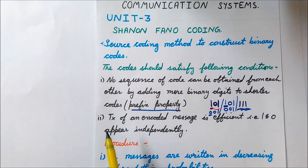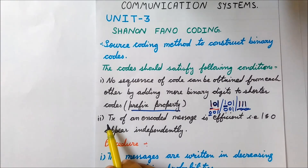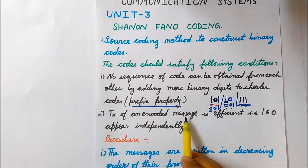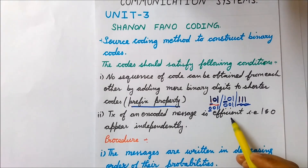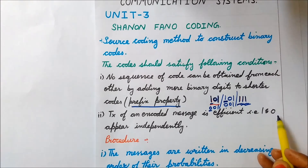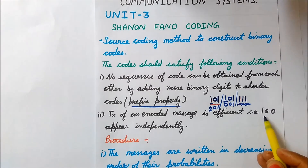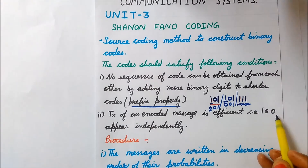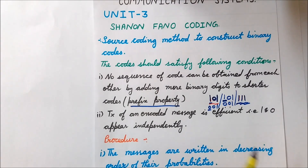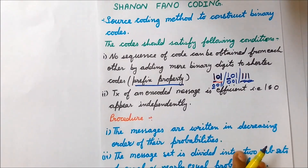The second condition is that the transmission of an encoded message should be efficient. Since we are using binary codes, we have only symbols 1 or 0, and the probability of occurrence of both 1 and 0 are the same — that is 0.5 — and they appear independently. Therefore it is an efficient code.